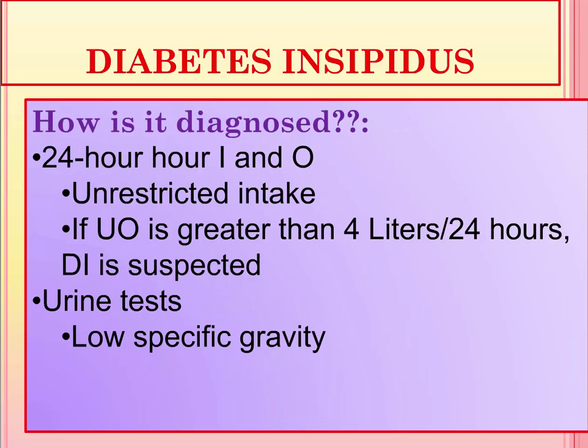How is diabetes insipidus diagnosed? Generally, they will do a 24-hour intake and output and allow the client to have restricted intake. If the output is greater than 4 liters over 24 hours, diabetes insipidus is suspected. Additional urine tests can be done — osmolarity will be very low, and the specific gravity will also be very low.